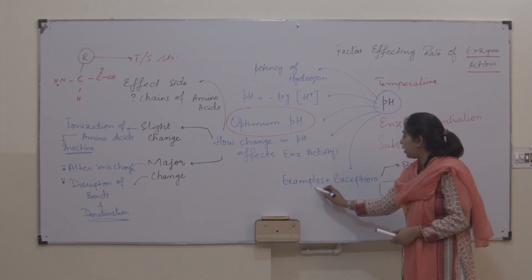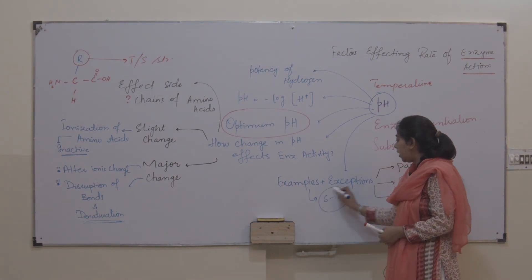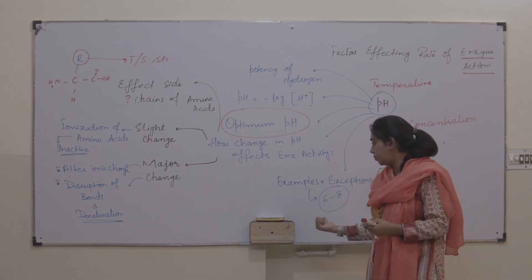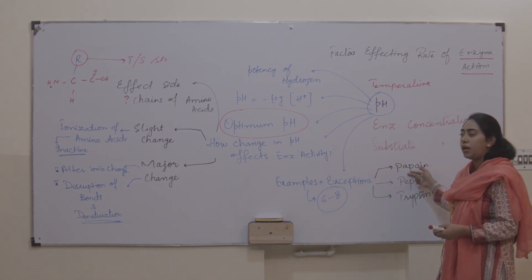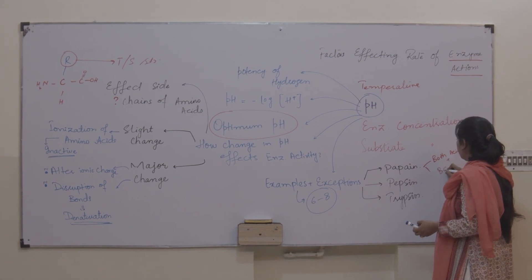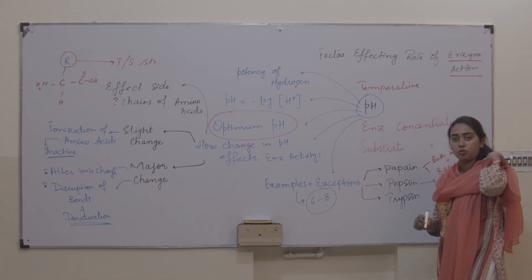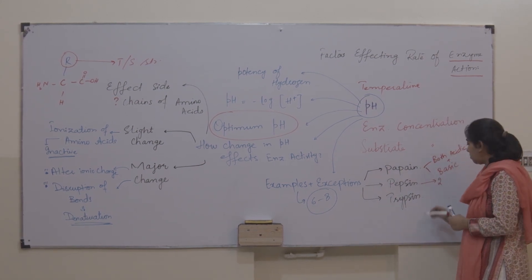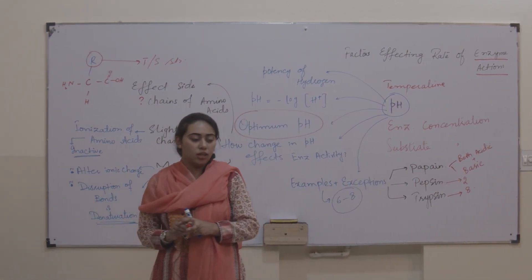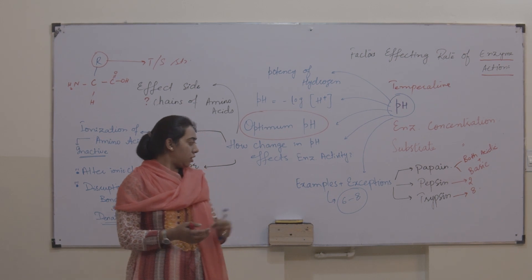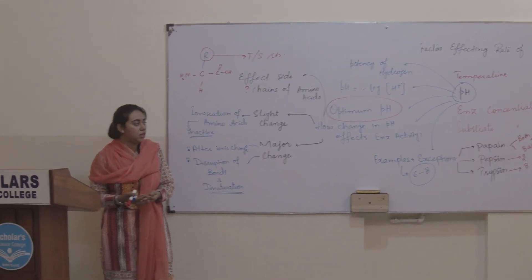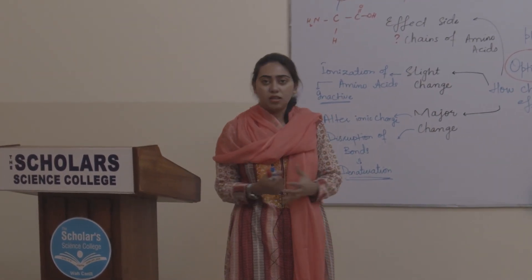Let's come to examples and exceptions. If we talk about enzymes in living bodies, most enzymes work maximally in the pH range of 6 to 8. But for example, papain — which comes from papaya — is activated both in acidic as well as basic pH, it works in both. Pepsin, which is released in our stomach by the gastric glands, works maximally at pH 2. And trypsin, which is present in our intestine and released in pancreatic juice, works at pH 8. That's enough for today — if you have any question, you may ask. Best of luck, thank you.